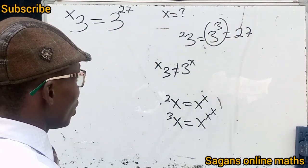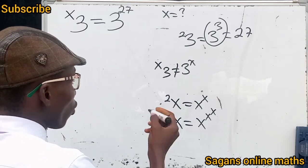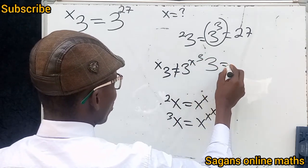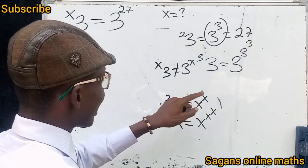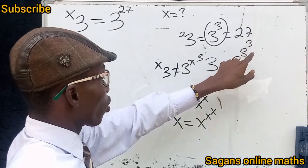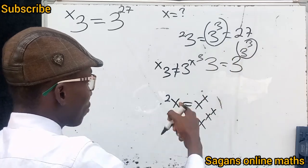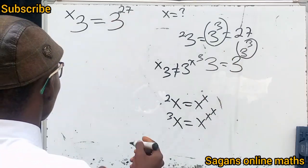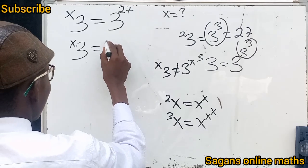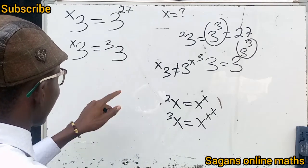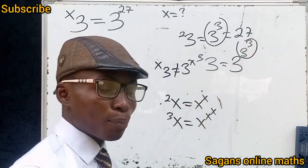So, what if we have 3 tetration 3? That simply means 3 raised to the power of 3 raised to the power of 3. And since 3 to the power of 3 equals 27, we can write 3 tetration 3 as 3 raised to the power of 27. So we can write that 3 tetration s equals 3 tetration 3, because 3 tetration 3 simply means 3 to the power of 27.